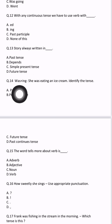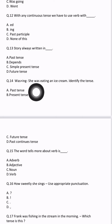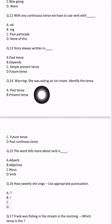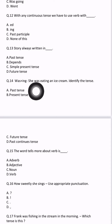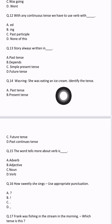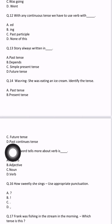Question number 14: was + -ing. For example, 'She was eating an ice cream.' Identify the tense. 'Eating' has -ing, so it is continuous tense. 'Was' is given, so it is past tense. So the tense is past continuous tense. Answer will be D — past continuous tense.